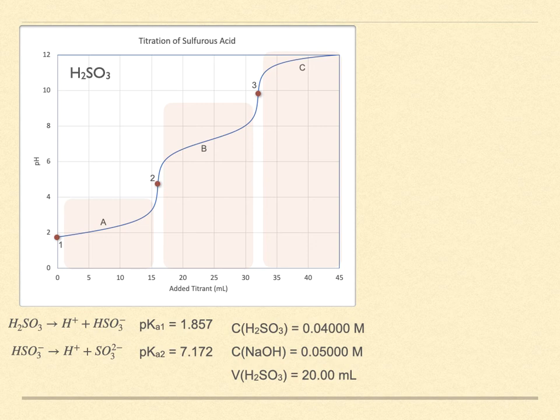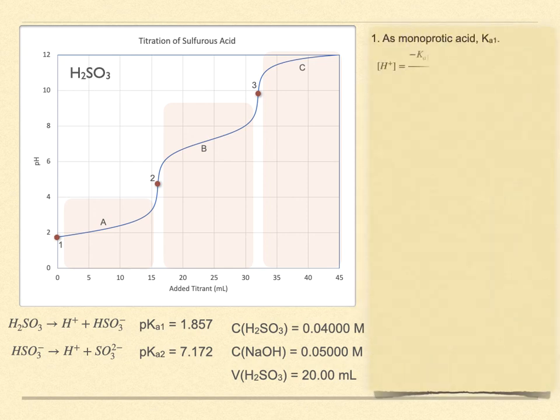Point one is just the starting pH. We learned before that with diprotic acid bases, we can usually consider the first proton as being alone. The second doesn't have a big influence on it at this point. Now, we could try to solve a cubic or even a quartic polynomial, but we have found that the quadratic approximation with water included is an excellent approximation in most situations. We just treat it as a monoprotic acid.